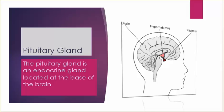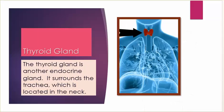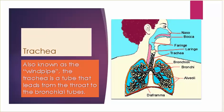Pituitary gland: the pituitary gland is an endocrine gland located at the base of the brain. Thyroid gland: the thyroid gland is another endocrine gland; it surrounds the trachea, which is located in the neck. Trachea: also known as the windpipe, the trachea is a tube that leads from the throat to the bronchial tubes.